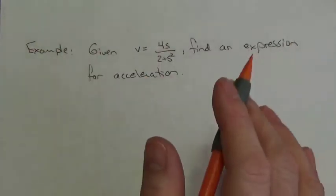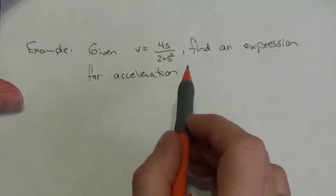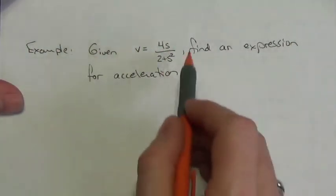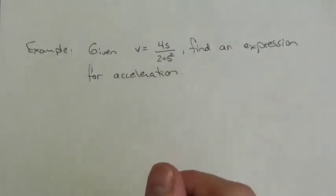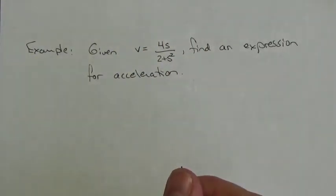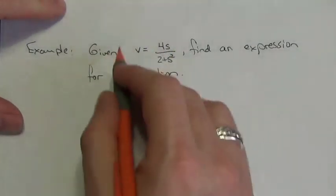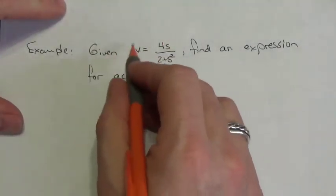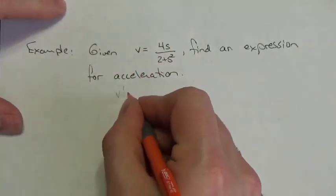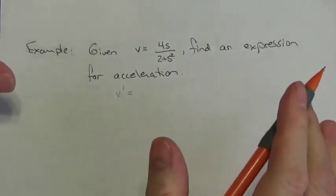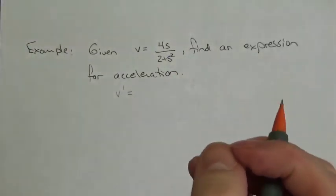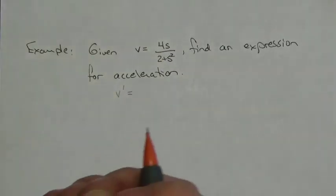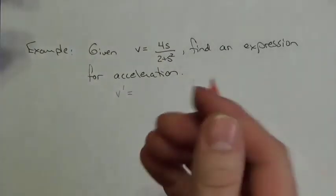Basically the same question. In this case, this is what we give you for velocity, and I'm going to ask once again for an expression for acceleration. When I take the derivative of v, that's v′. Again, there's no t explicitly here, so you have to take the derivative implicitly.